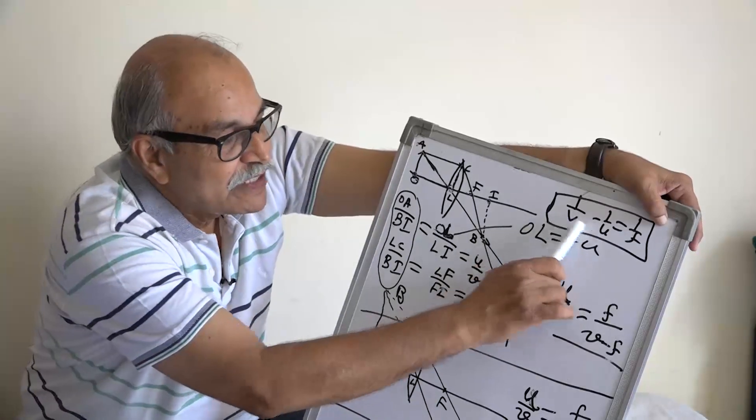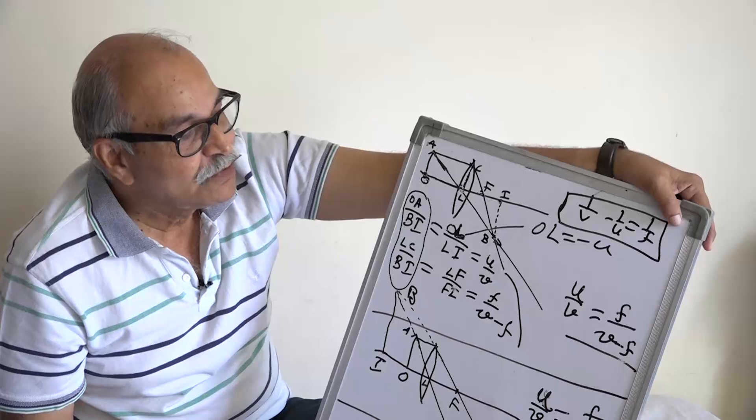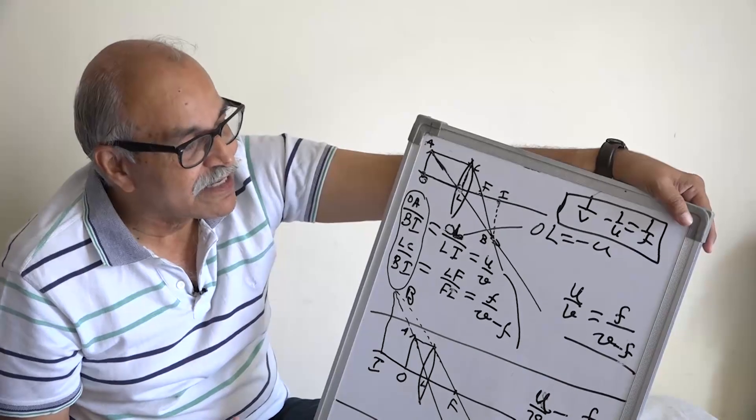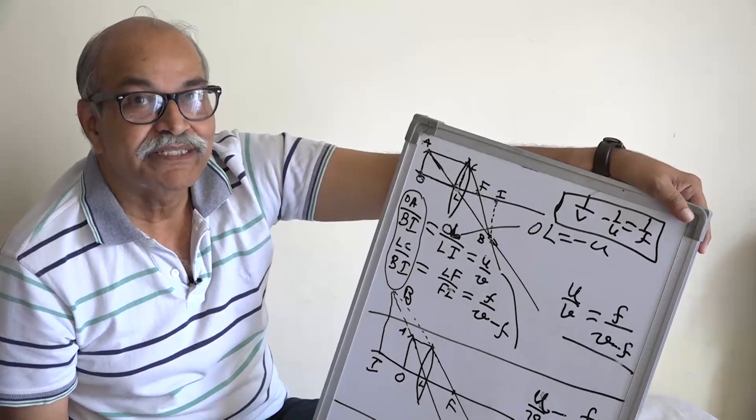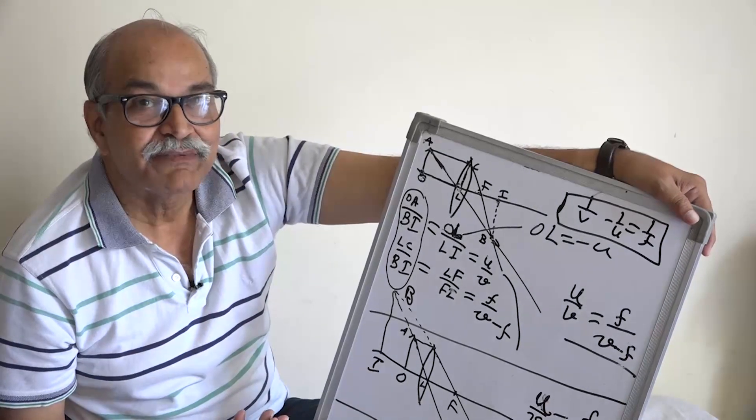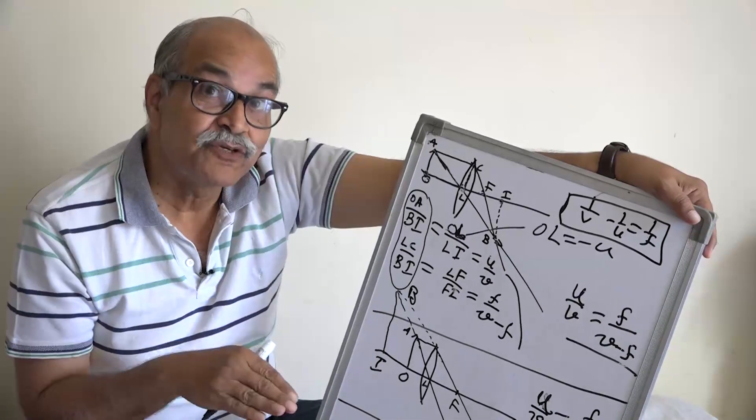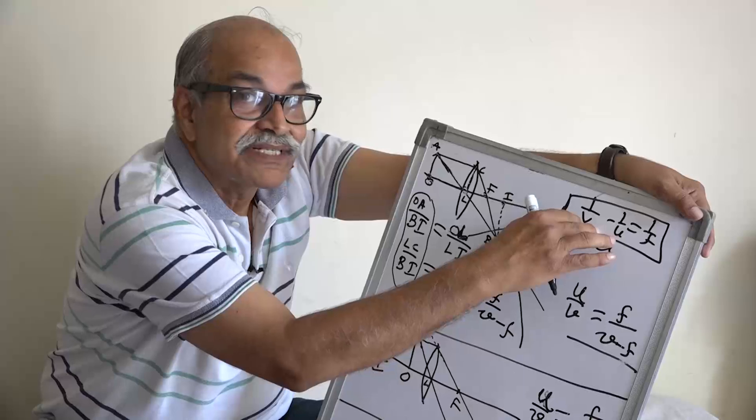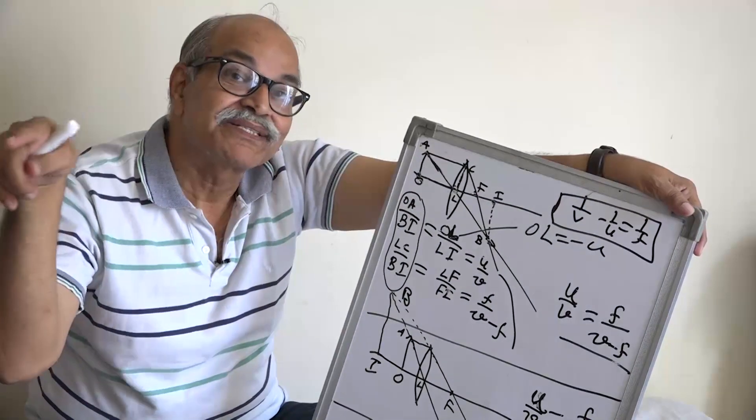This relation is between the coordinates and when you solve numerical problems, you are given numbers, you are given distances. The object is placed at 20 centimeters from the lens and all those things. You are given distances, you have to convert them into coordinates and then fit into it. That is why you again use those minus plus there.